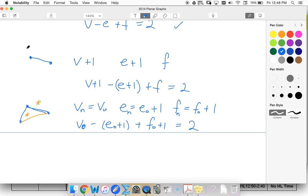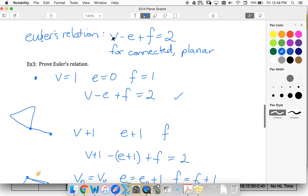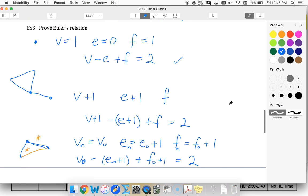So this graph could have looked like something like this. Adding this on, I won't have created any new regions. So always with this minus here, I'll end up canceling out whatever new thing that I added. So Euler's relation is always going to hold true for connected planar graphs.